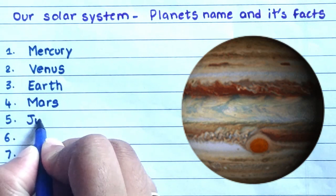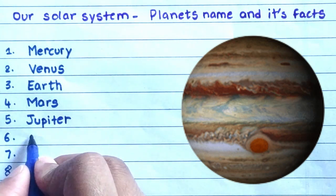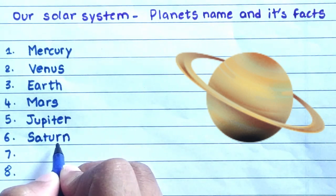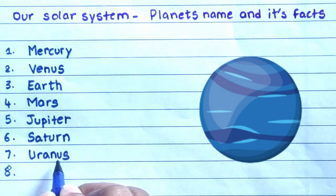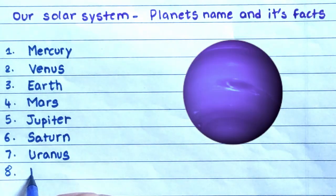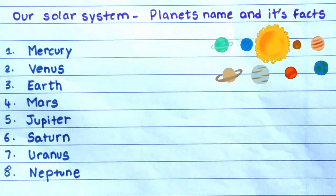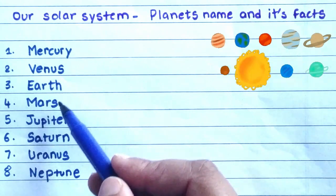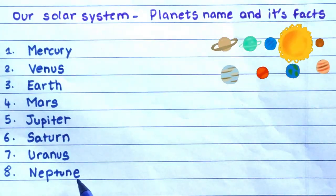J-U-P-I-T-E-R, Jupiter. S-A-T-U-R-N, Saturn. U-R-A-N-U-S, Uranus. N-E-P-T-U-N-E, Neptune. Now let us repeat once again: Mercury, Venus, Earth, Mars, Jupiter, Saturn, Uranus, Neptune.